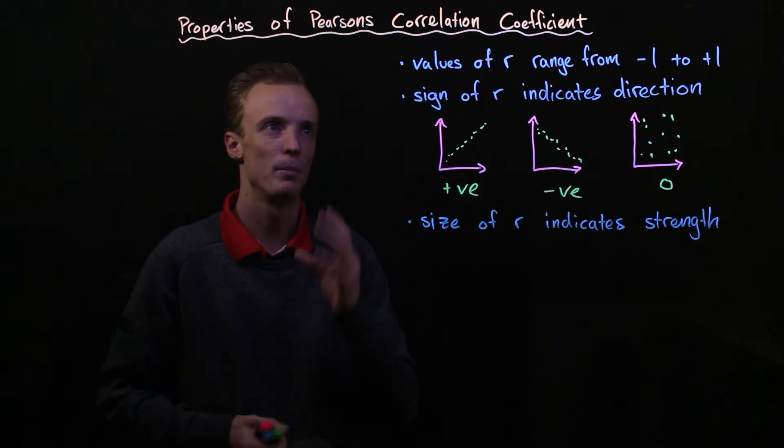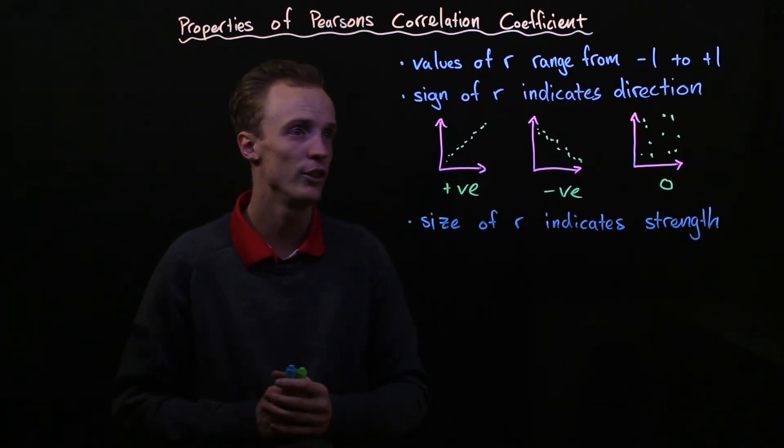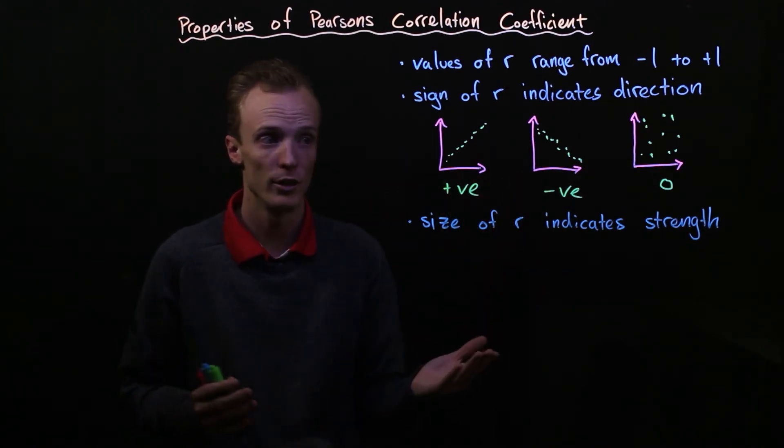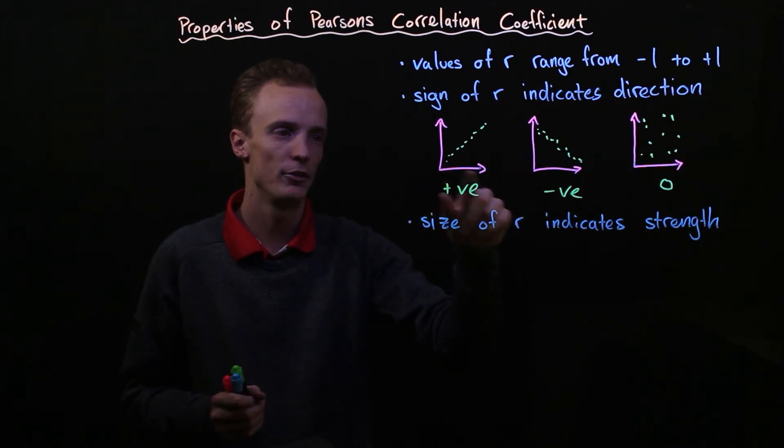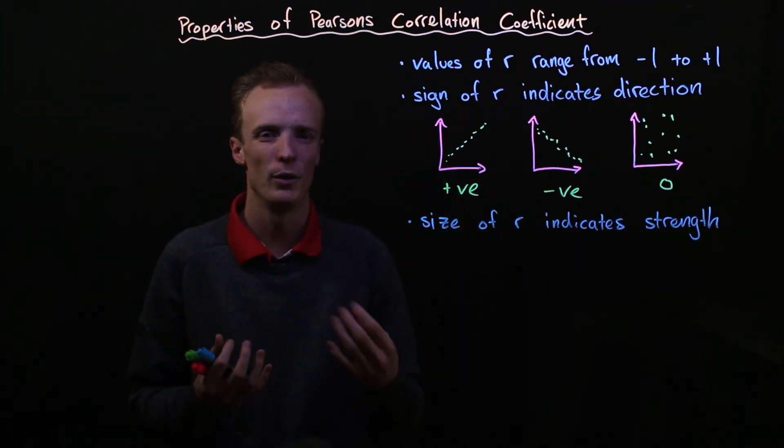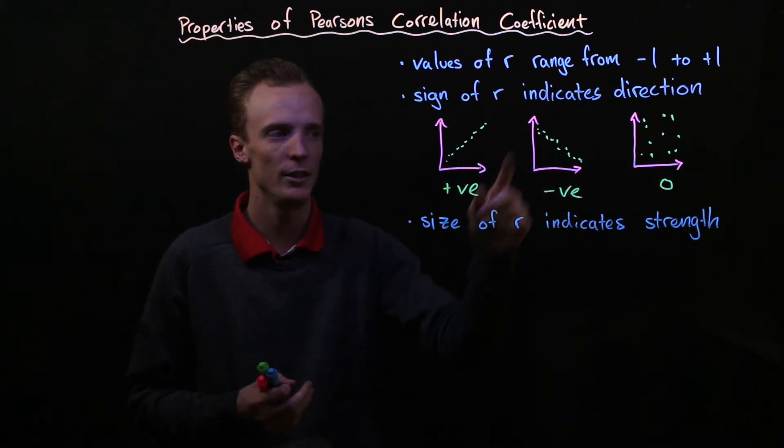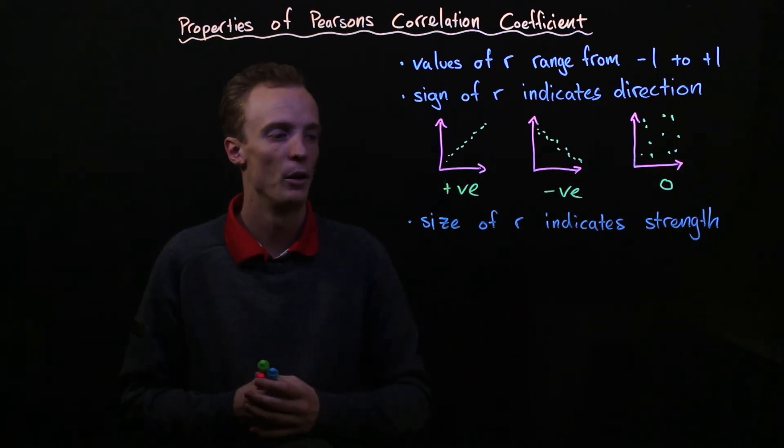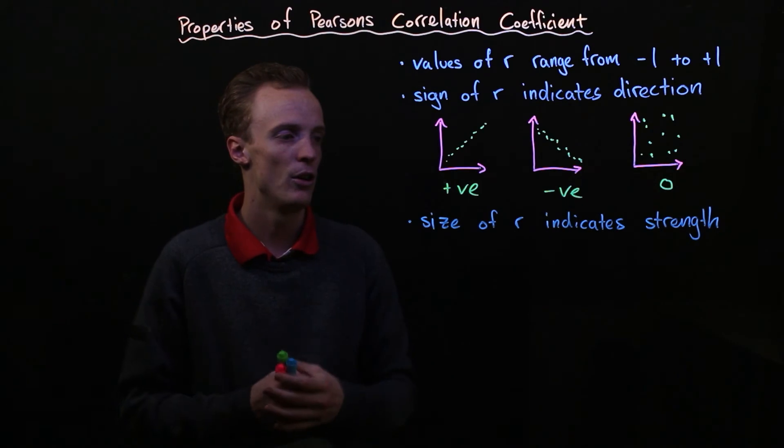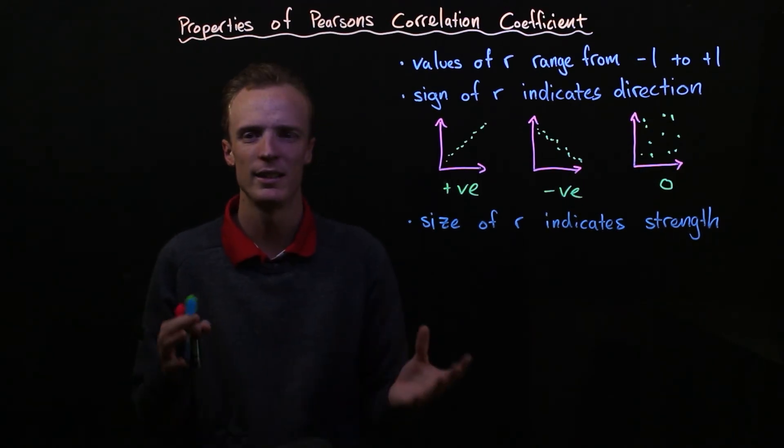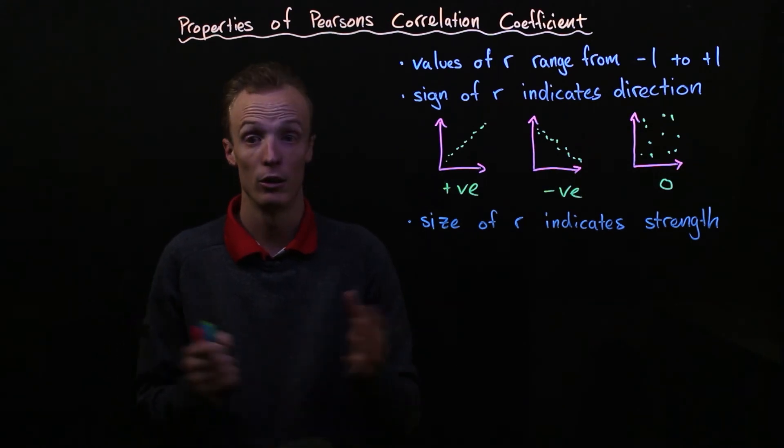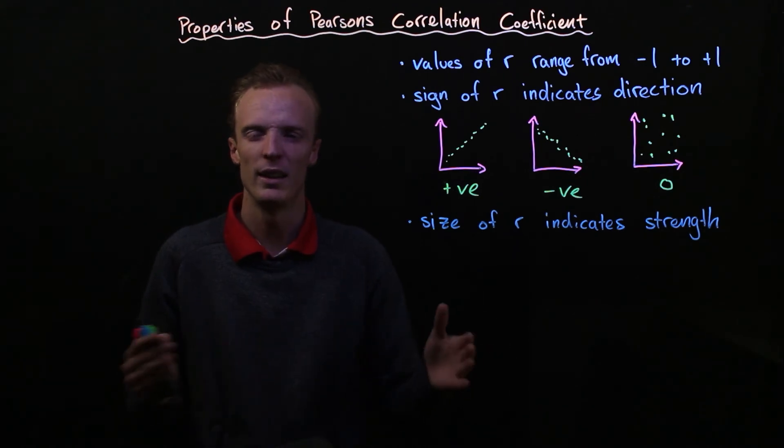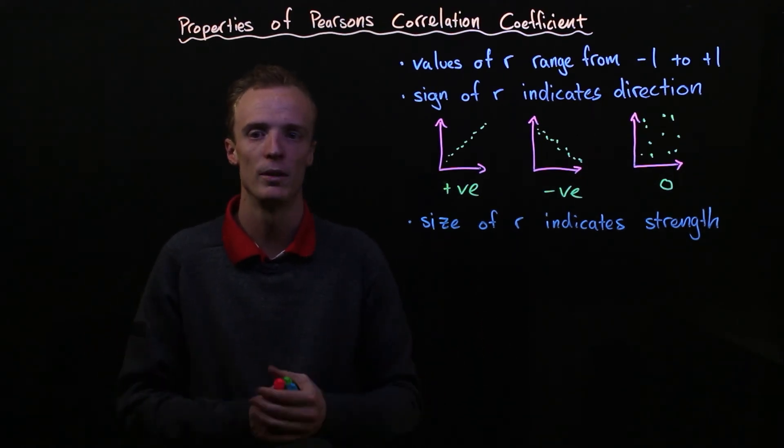But the three main things to remember about the properties of Pearson's correlation coefficient are: they range from negative one through to positive one. The sign does indicate the direction, positive meaning that an increase in our explanatory increases our response. Negative meaning the opposite, an increase of our explanatory decreases our response. And zero meaning that there's no correlation between it at all. And the third is the size of our Pearson's correlation coefficient indicates the strength of our relationship. The closer it moves to zero, the weaker the strength. But negative one and positive one indicating that there is a perfect correlation between our two points.